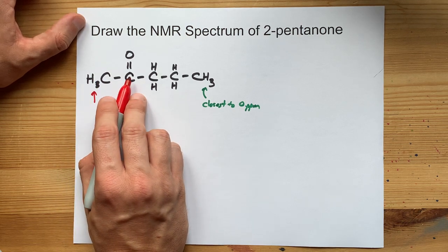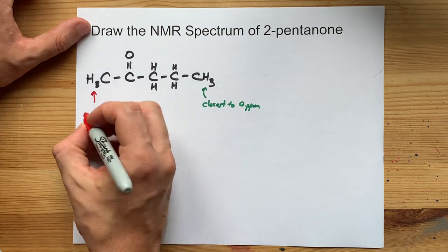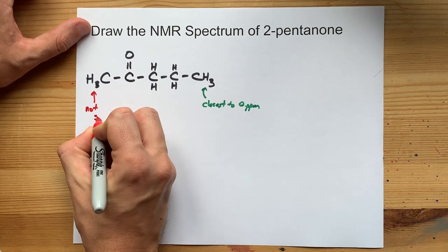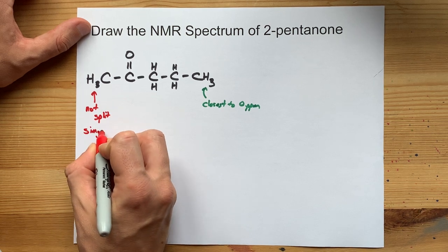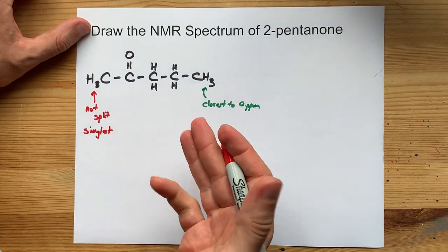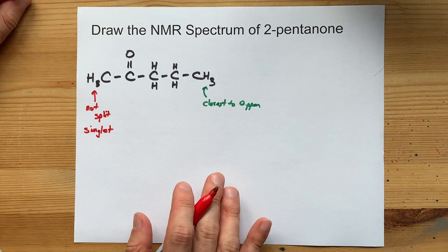Well, if you go over, there's no hydrogens there, which means that these are not going to be split at all. That's going to mean that they appear as a singlet, even in the high-resolution NMR spectrum.